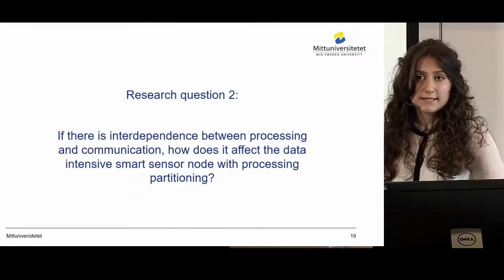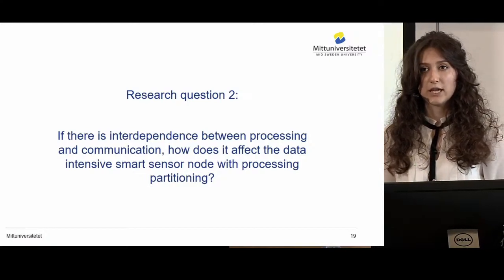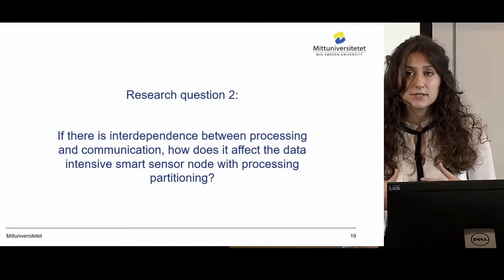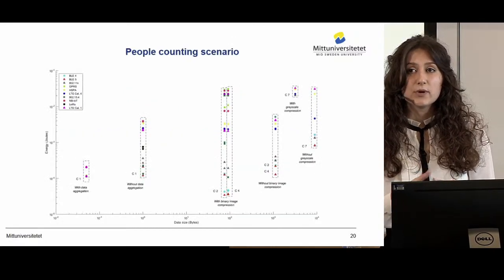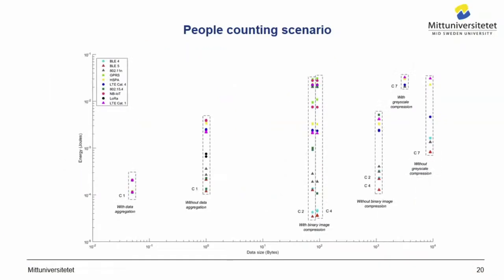The second research question is: if there is interdependence between processing and communication, how does it affect the data intensive smart sensor node with processing partitioning? To address this, I again rely on the people counting scenario but use all ten communication technologies. Here you can see all the different intelligence partitioning configurations combined with the different communication technologies, where every data point represents a combination of a partition point and a communication technology. As we also consider hardware-software partitioning, there are more than one data points for the same communication technology in the same partition.